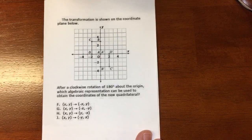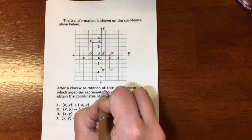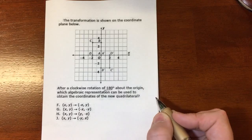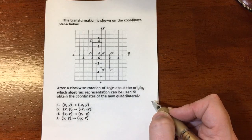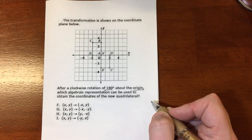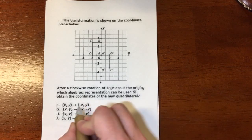Alright, this transformation - it's going to be after a clockwise rotation of 180 degrees about the origin, which in 8th grade is always about the origin. Which algebraic representation can be used to obtain the coordinates of the new quadrilateral?